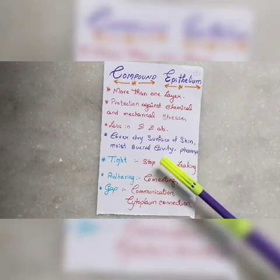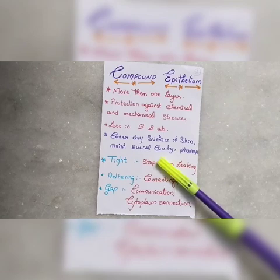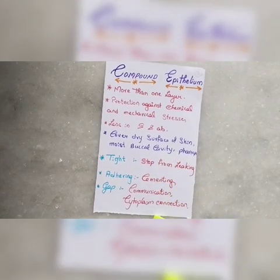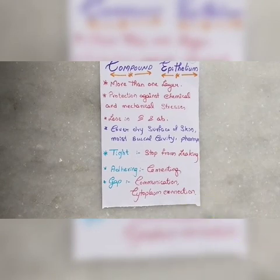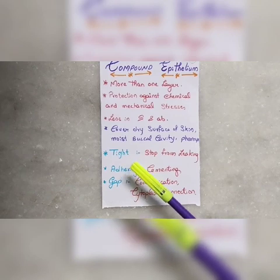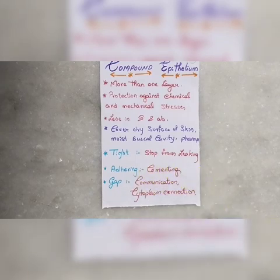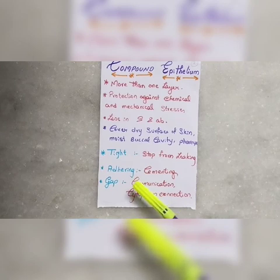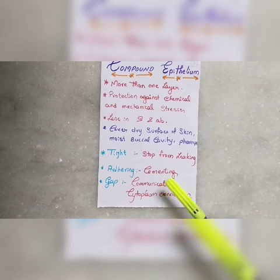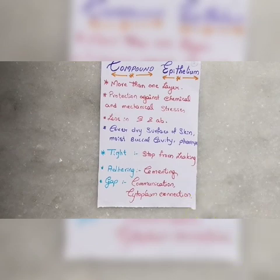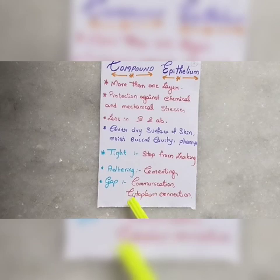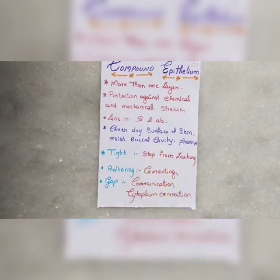Compound epithelium is found on the dry surface of the skin for protection. There are three types of cell junctions. First, tight junction — two cells are tightly joined together, preventing leakage. Second, adhering junction — two cells are cemented together. Third, gap junction — used for communication between two cells via cytoplasm, allowing ions and molecules to pass directly between cells.